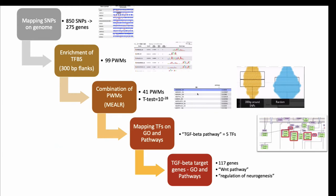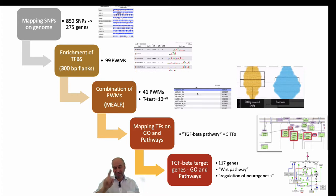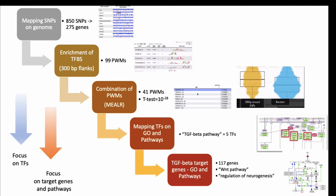And finally, we looked for the target genes which might be targets for this TGF-beta pathway and we found 117 genes which belong to the WNT pathway and which are actually enriched in regulation of neurogenesis. So in fact, we were using this algorithm gradually to focus on transcription factors and on their target genes and pathways which might be important for educational attainment.